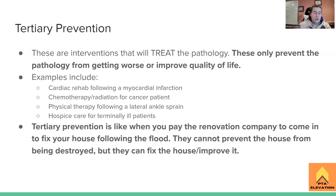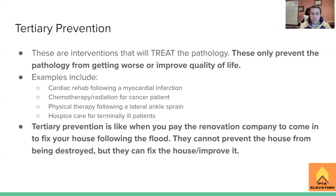Examples of tertiary prevention include cardiac rehab, where physical therapy comes in after an MI to help a patient who's had a heart attack improve their quality of life and get back to doing the things they want to do. Chemotherapy or radiation for cancer patients to prevent the cancer from spreading or growing is also tertiary prevention. Physical therapy following a lateral ankle sprain — working on stability and impaired body structures — also falls here, referencing the ICF model.